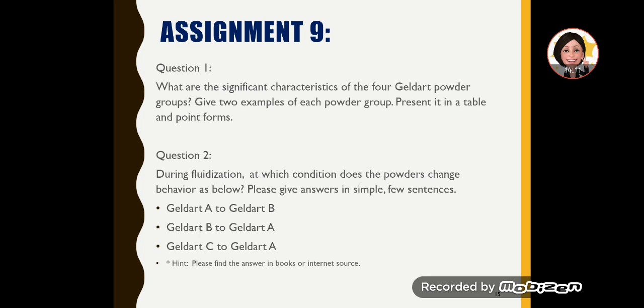This is question one and question two. Please answer them and upload it onto the spectrum. For question one, please give simple answers and give two examples of each group powder. Find something that is different from what is present in the slides. For the significant characteristics, you point out the significant characteristics. It's not the same table that I presented. Your table should give the significant characteristics of the powders.